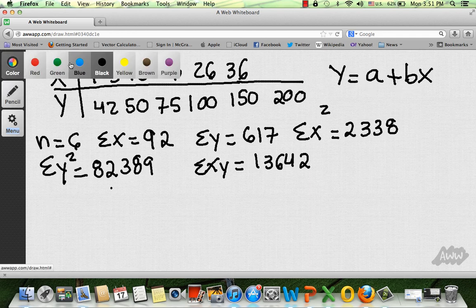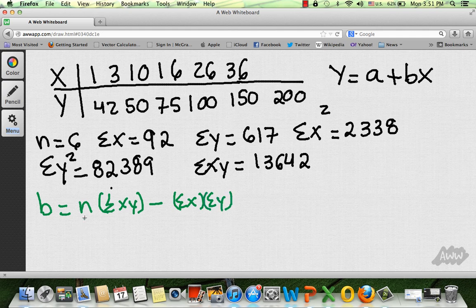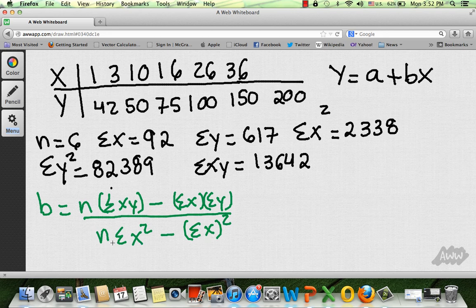So let's put this in another color so you know exactly what I'm doing. b is equals to n times the sum of x times y minus the sum of x times the sum of y over n times the sum of x squared minus the sum of x squared. Look at the difference between this and this. This guy here is the sum of x squared, which is actually this one. And this is the sum of x, 92, and then you square it. So let's go ahead and plug everything one by one.